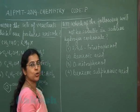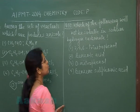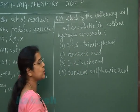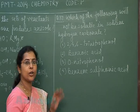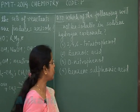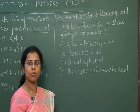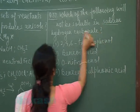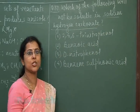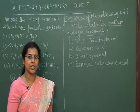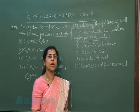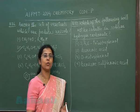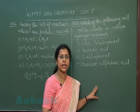Question number 87: which of the following will not be soluble in sodium hydrogen carbonate? First option is 2,4,6-trinitrophenol. Second option is benzoic acid. Third option is orthonitrophenol. Fourth option is benzene sulfonic acid. Sodium hydrogen carbonate is used as a test for carboxylic acid — all carboxylic acids when treated with NaHCO₃ evolve CO₂ gas (effervescence).